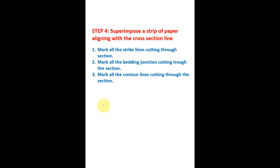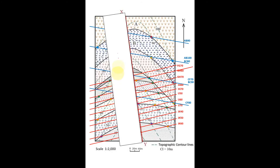For the cross section, we superimpose a strip of paper aligned with the cross section line XY. We mark all strike lines, all bedding junctions, and all contour lines on the strip. Aligning the strip exactly with XY, we mark X and Y, then write all the strike line names — AB 90, AB 100, BC 80 — and all the red strike lines as well.